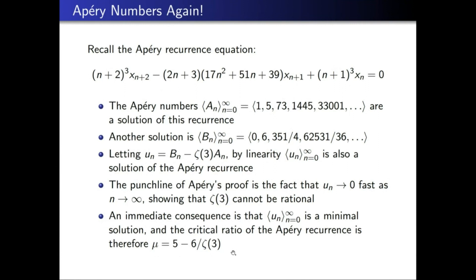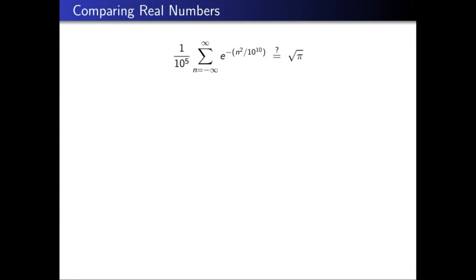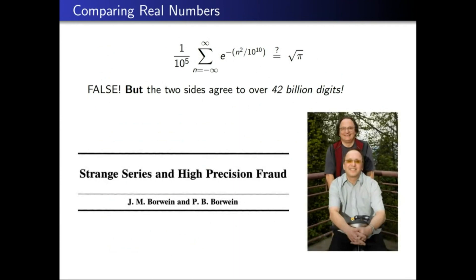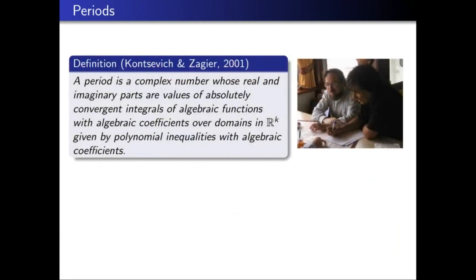This brings us to comparing real numbers. Here's an intriguing example from a paper by the Borwein brothers titled 'Strange Series and High Precision Fraud': a doubly infinite sum that appears equal to √π but is actually false — the two sides agree to over 42 billion digits. Comparing real numbers is in general undecidable, but there is a large class of numbers — periods, introduced by Kontsevich and Zagier in 2001 — for which decidability is believed to hold.